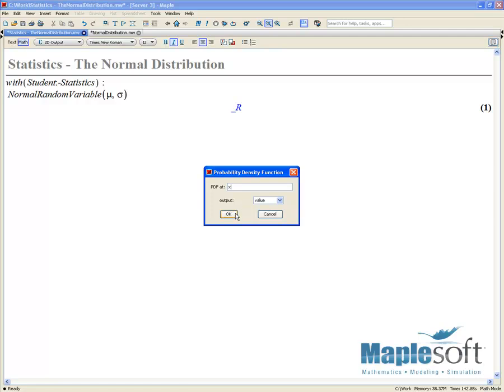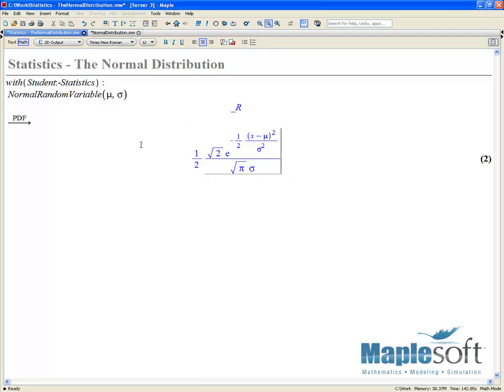We'll generate this at a lower case x, and there we have the PDF of our normal distribution.